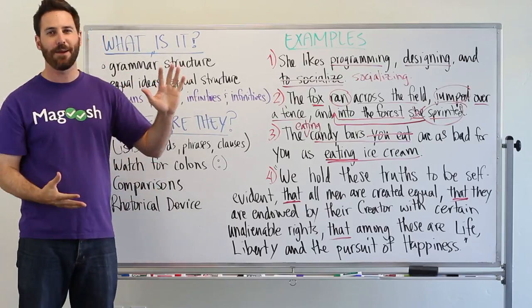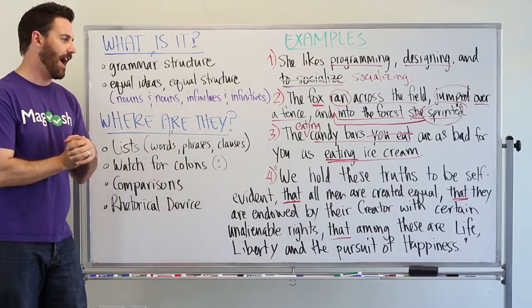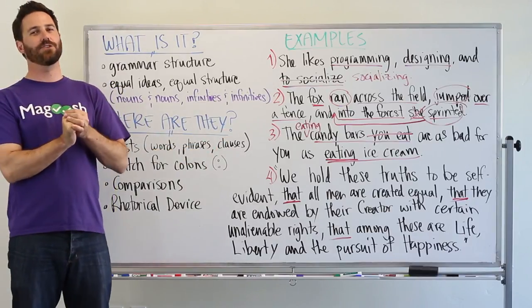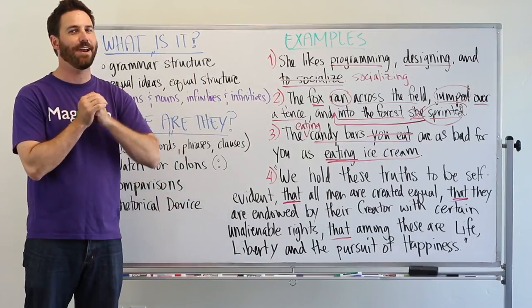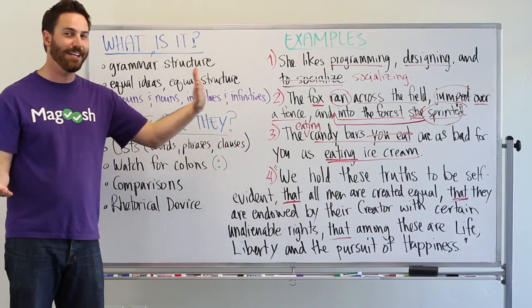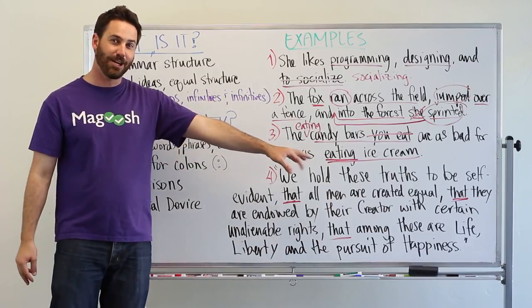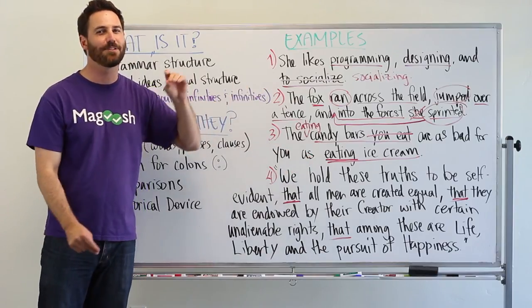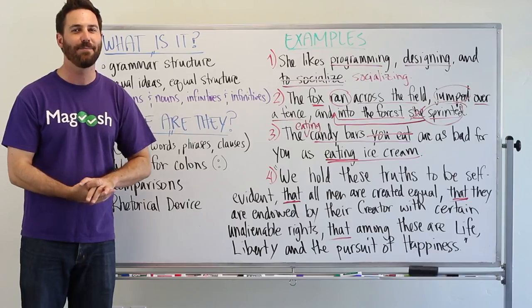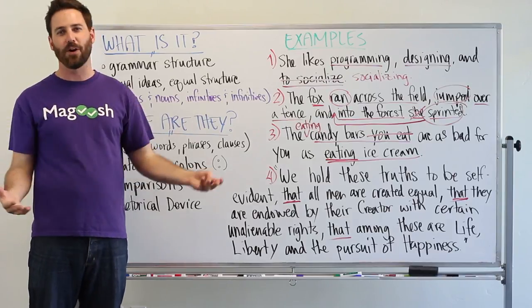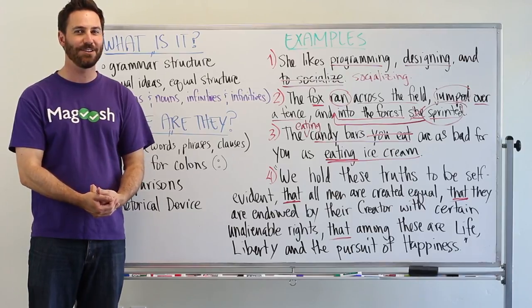All right. So that's how you identify parallel structures. Hopefully this helps you when you dive into sentence corrections. If you have any questions, please leave them in the comments below. I'm happy to answer any questions that you might have. If you like these videos, please subscribe to our YouTube channel. There should be some check marks over there that you can click on to subscribe. And then of course, head over to gmat.magoosh.com if you need even more GMAT help. All right. Be excellent to the universe.